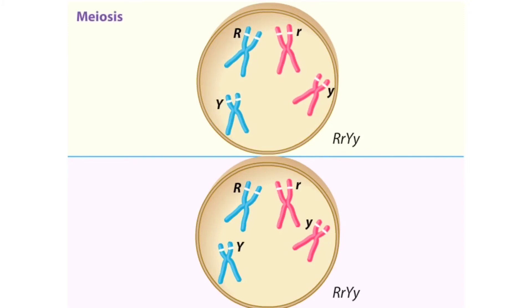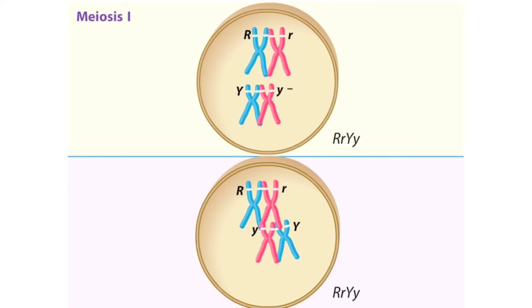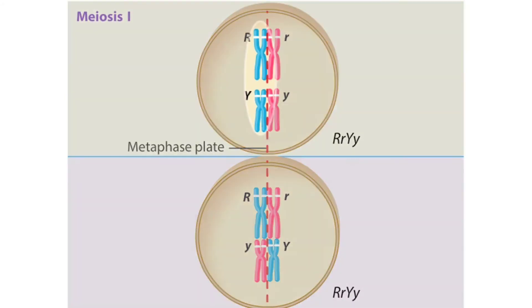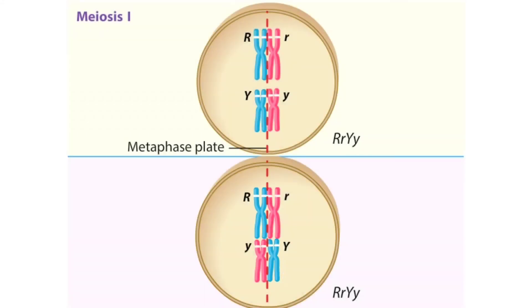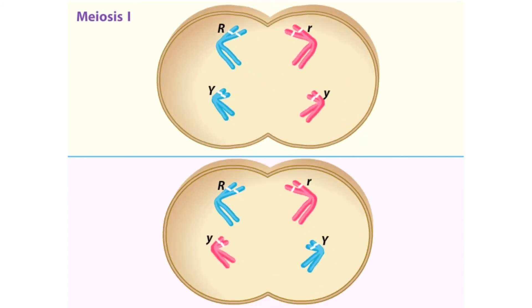During meiosis I, the pairs of homologous chromosomes line up randomly at the midplane of the cell, called the metaphase plate. Both blue chromosomes may line up on one side of the plate, or they may line up on opposite sides of the plate. The chromosomes themselves assort independently. How one chromosome pair lines up on the plate does not affect how another lines up. As meiosis I continues, the chromosomes in the pairs separate from each other and migrate to opposite poles of the cell. The cells divide.